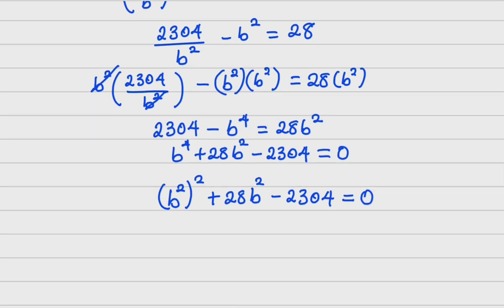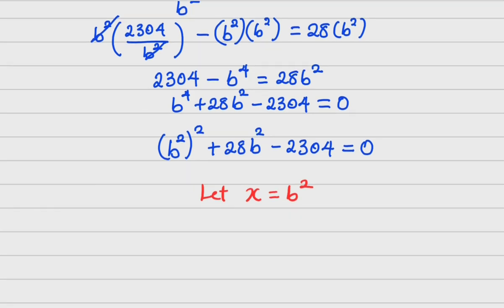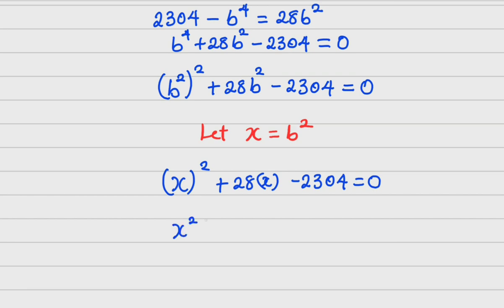To reduce the complexity, let x = b². Then wherever I see b², I replace it with x. The equation becomes x² + 28x − 2304 = 0. This is now a standard quadratic equation.